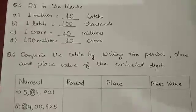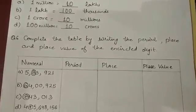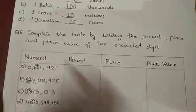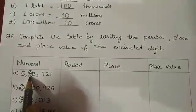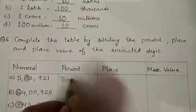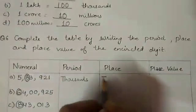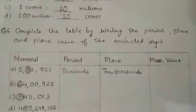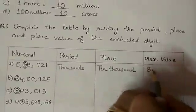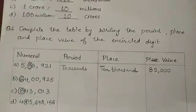Now, complete the table by writing the period, place and place value of the encircled digit. First numeral, it is according to Indian place value system. So this is the period of thousands. And in the thousands period, it is at 10,000s place. So we will write here, the place is 10,000. Now, the place value, it should be 80,000. In the same way, you will solve the remaining 5 parts of the question.